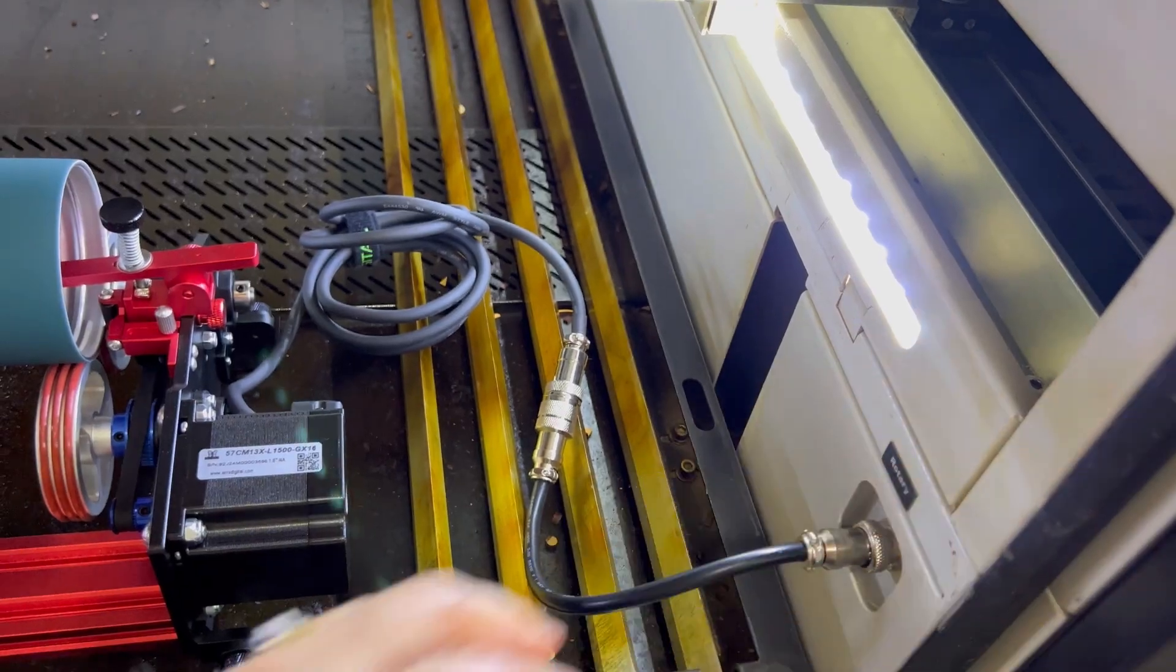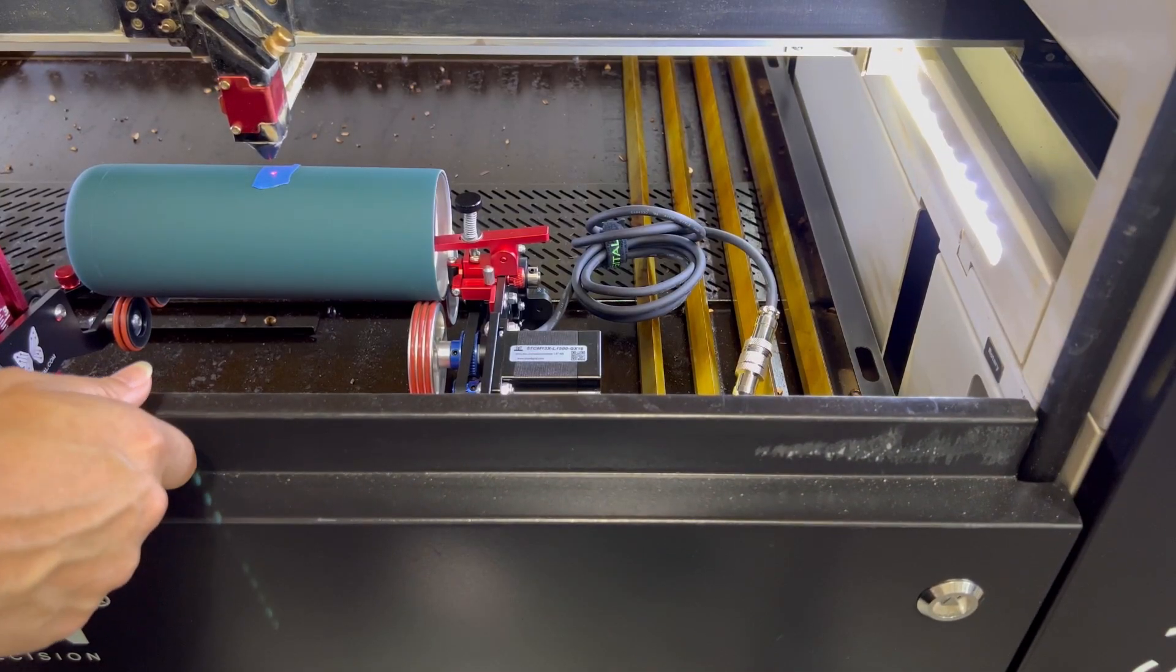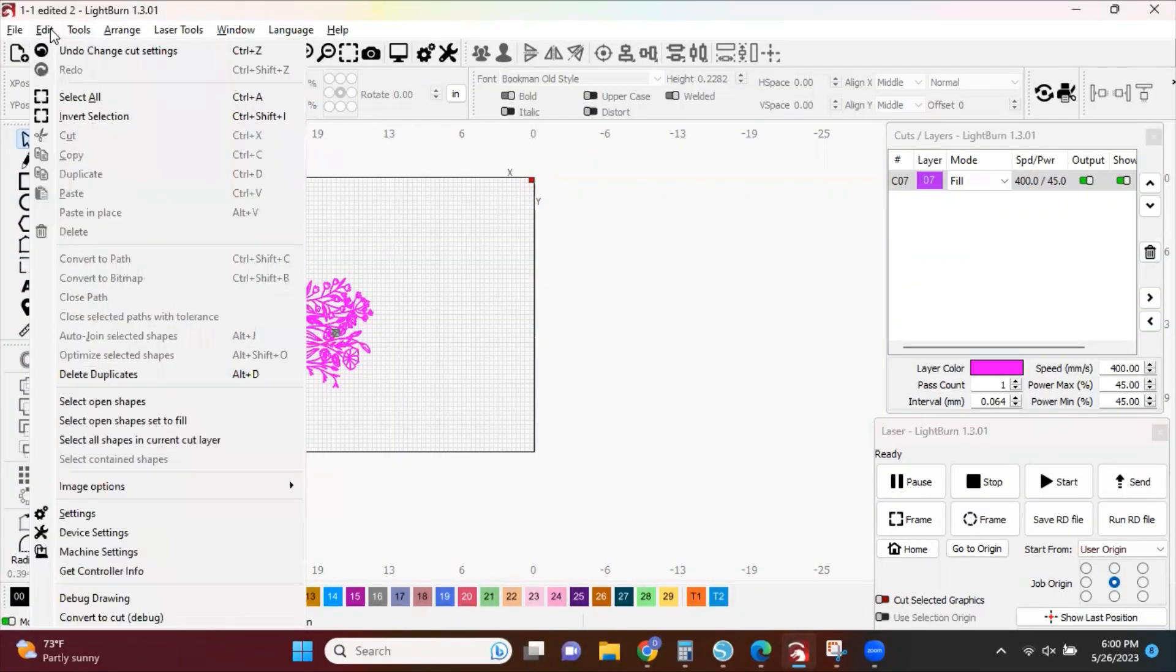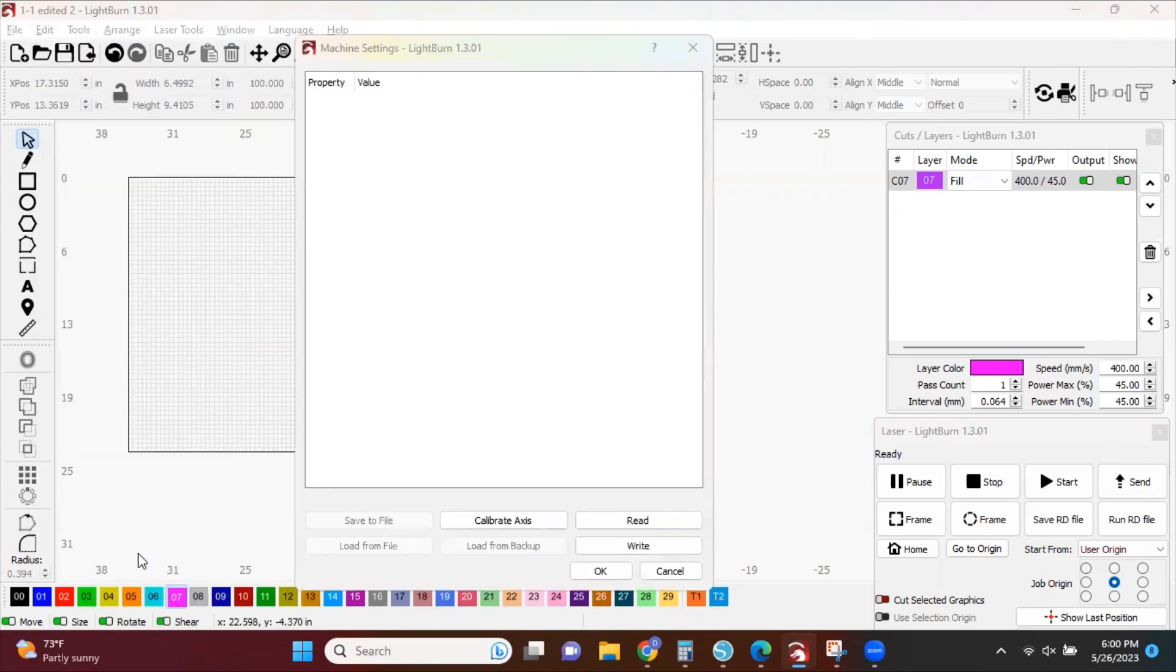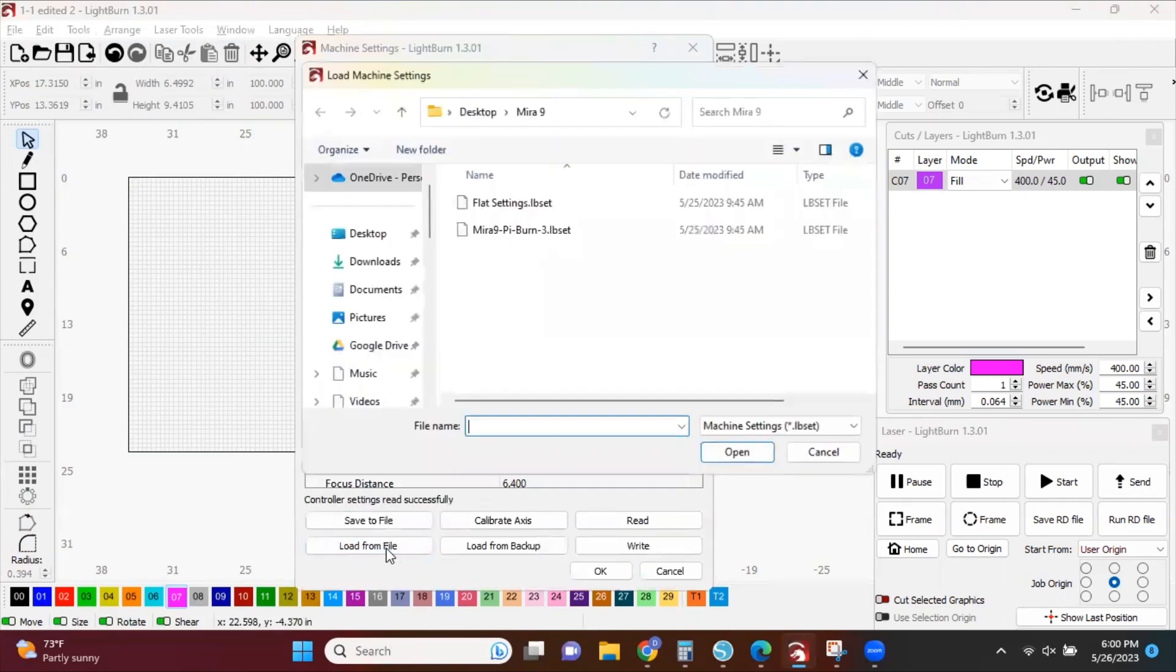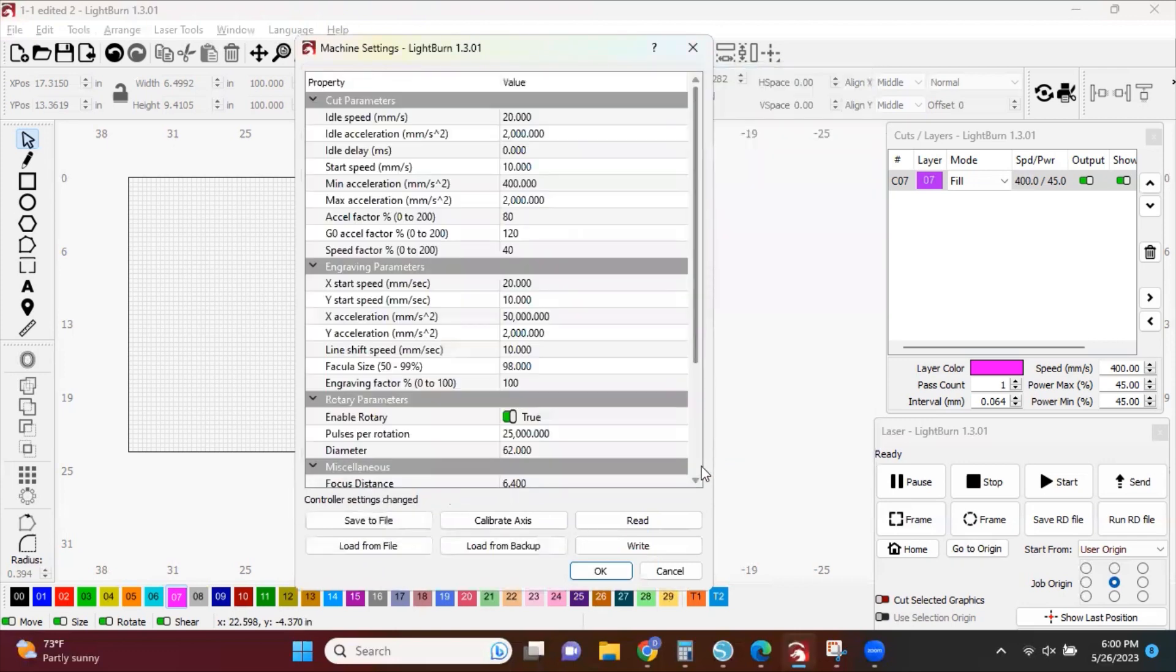Now we're ready to go over to Lightburn. In order to connect your rotary to the machine I'm going to go to Edit and Machine Settings. Then I want to click on Load File, select my mirror nine settings, click Open, click Write, and then OK.